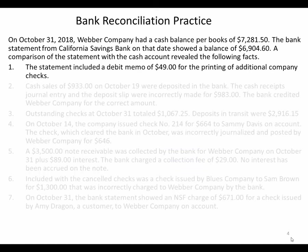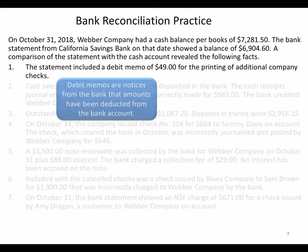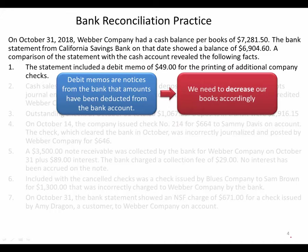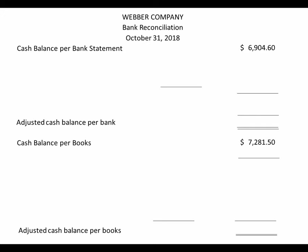Let's look at number one. The statement included a debit memo of $49 for the printing of additional company checks. Weber Company ordered some checks and the bank charged them a fee. Weber Company doesn't necessarily know what that fee is until they see the debit memo on the statement. So now we need to decrease our book side by the amount of that fee, decreasing our cash balance per books by the check printing charge.